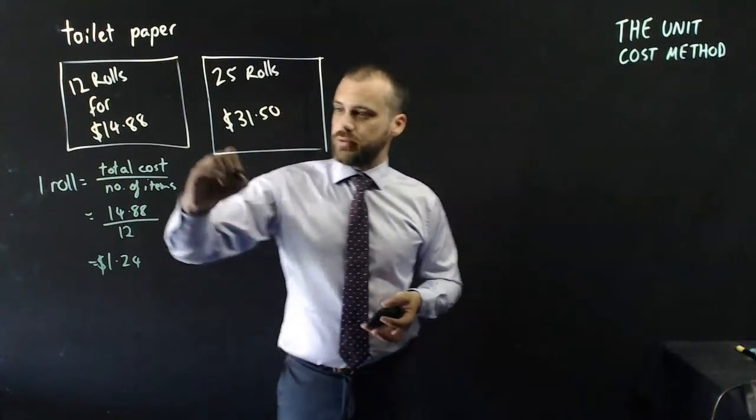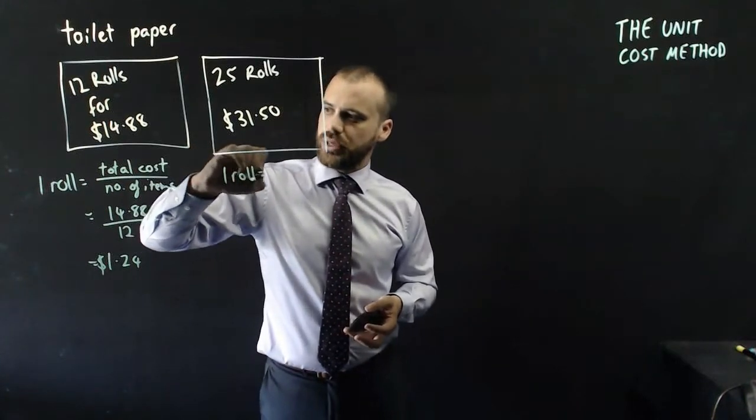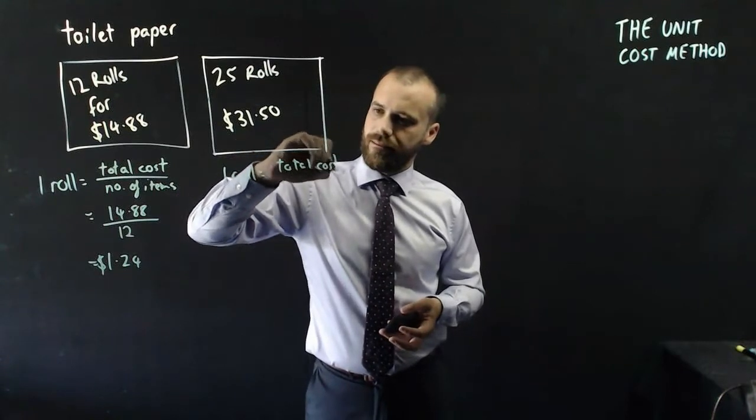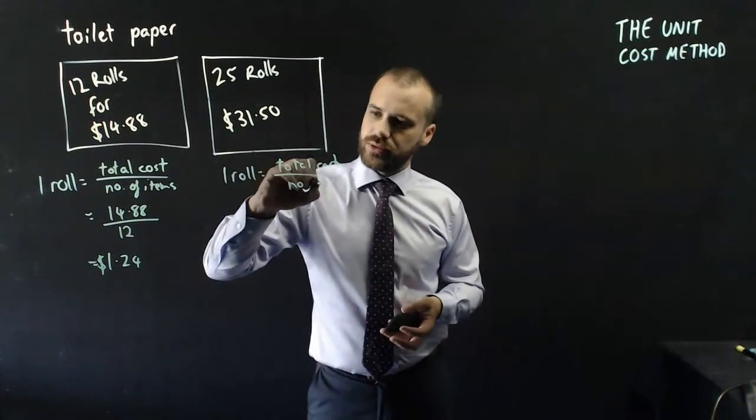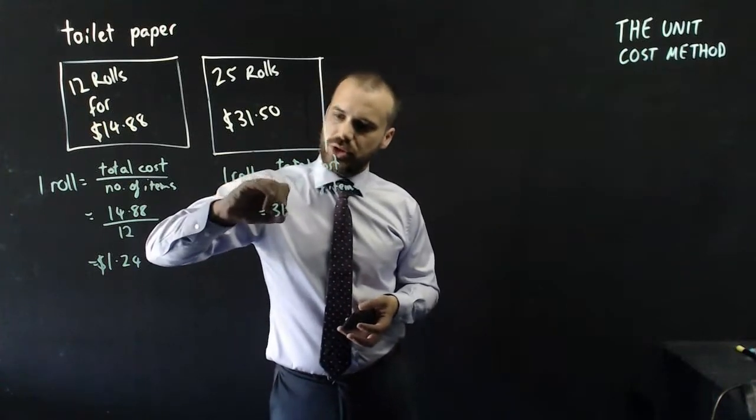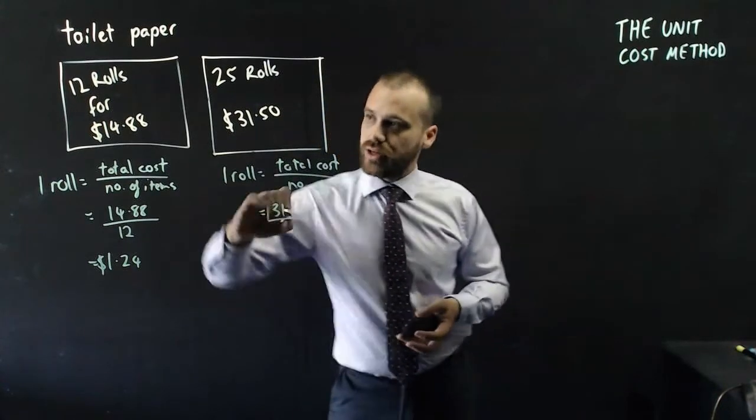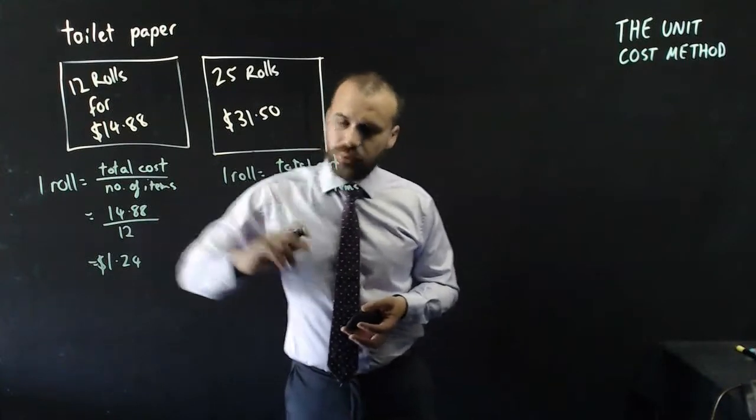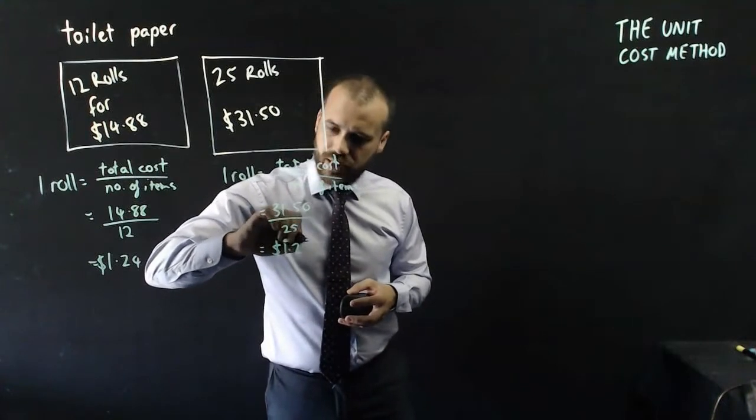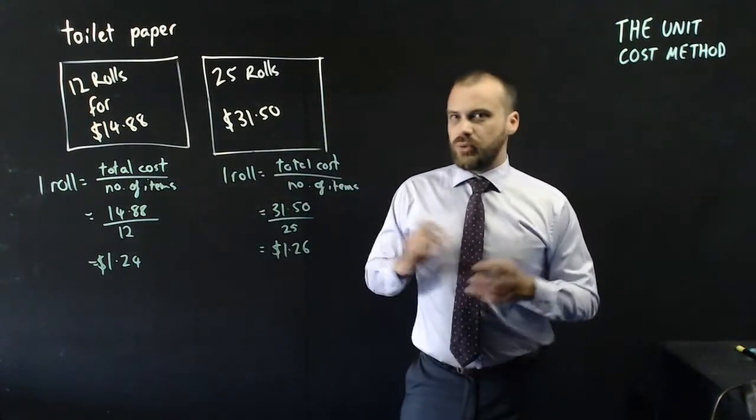What about this one? One roll will be equal to the total cost over the number of items. In this case, that's $31.50 over 25. And when you type that into your calculator, you're going to get $1.26.